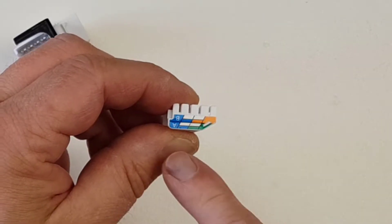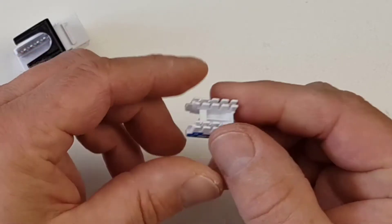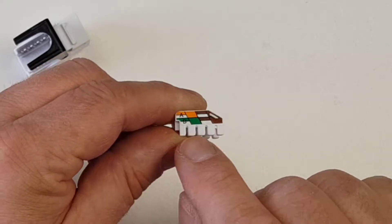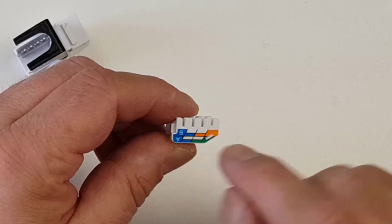Which means that we are going to be putting our orange to the front on this side, our brown to the front on that side, green to the back here, and blue to the back on this side.